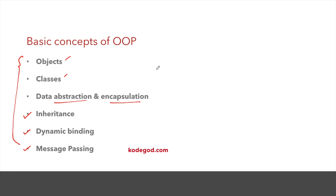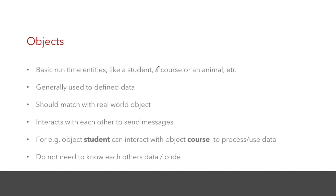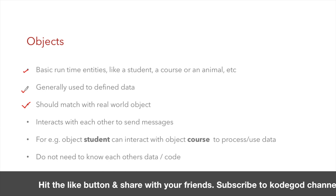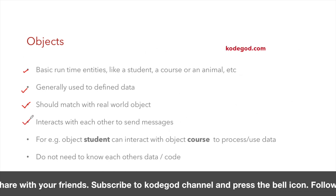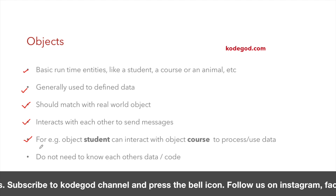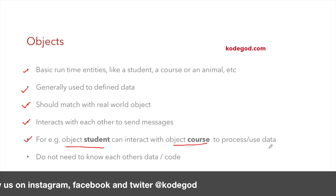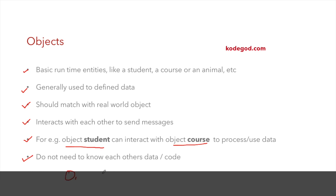Objects are basic runtime entities like student, course, or an animal — usually real-world objects. They are generally used to define data, and objects interact with each other to send messages. For example, object Student can interact with object Course to process or use data, while not needing to know each other's internal data.